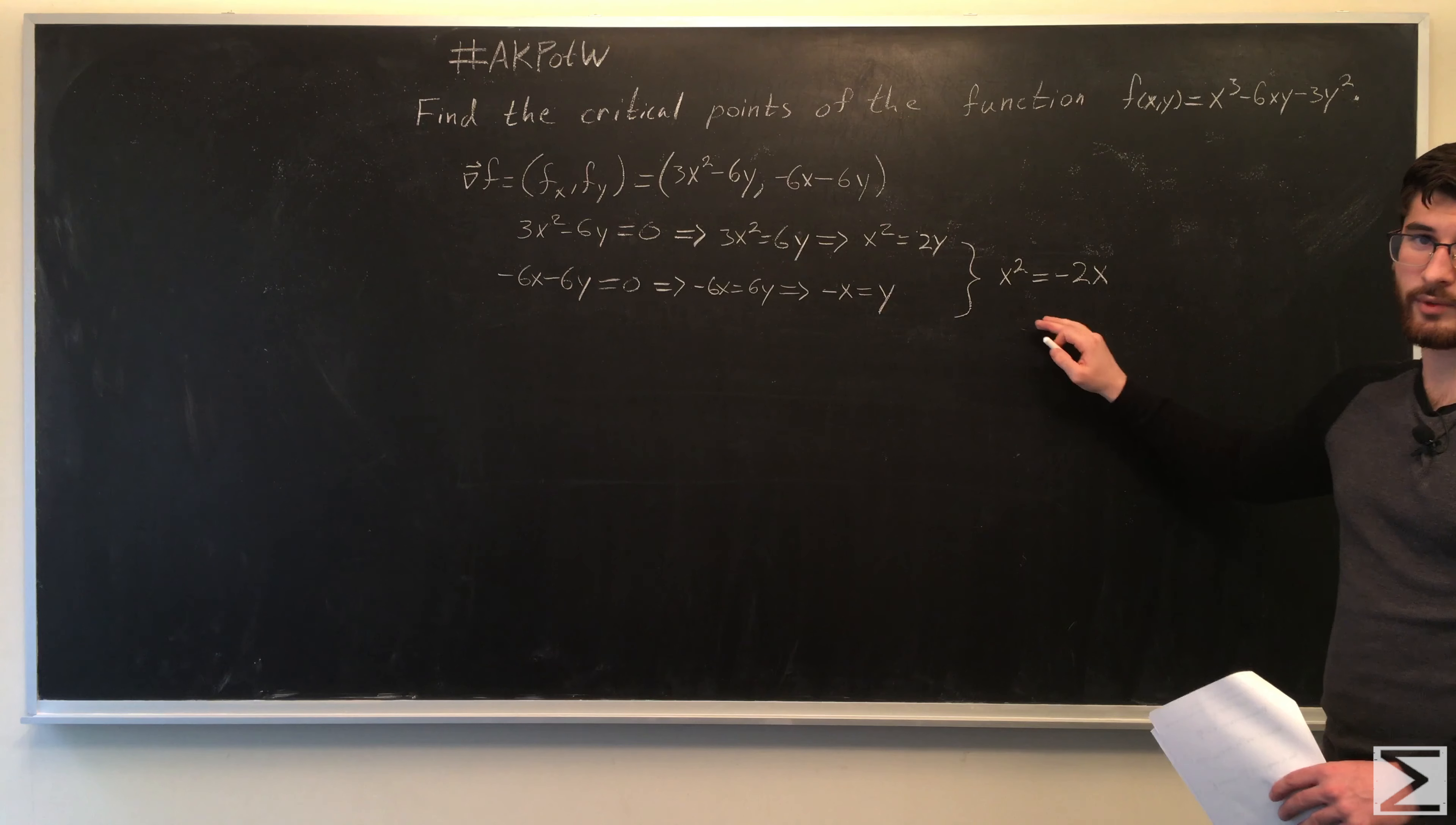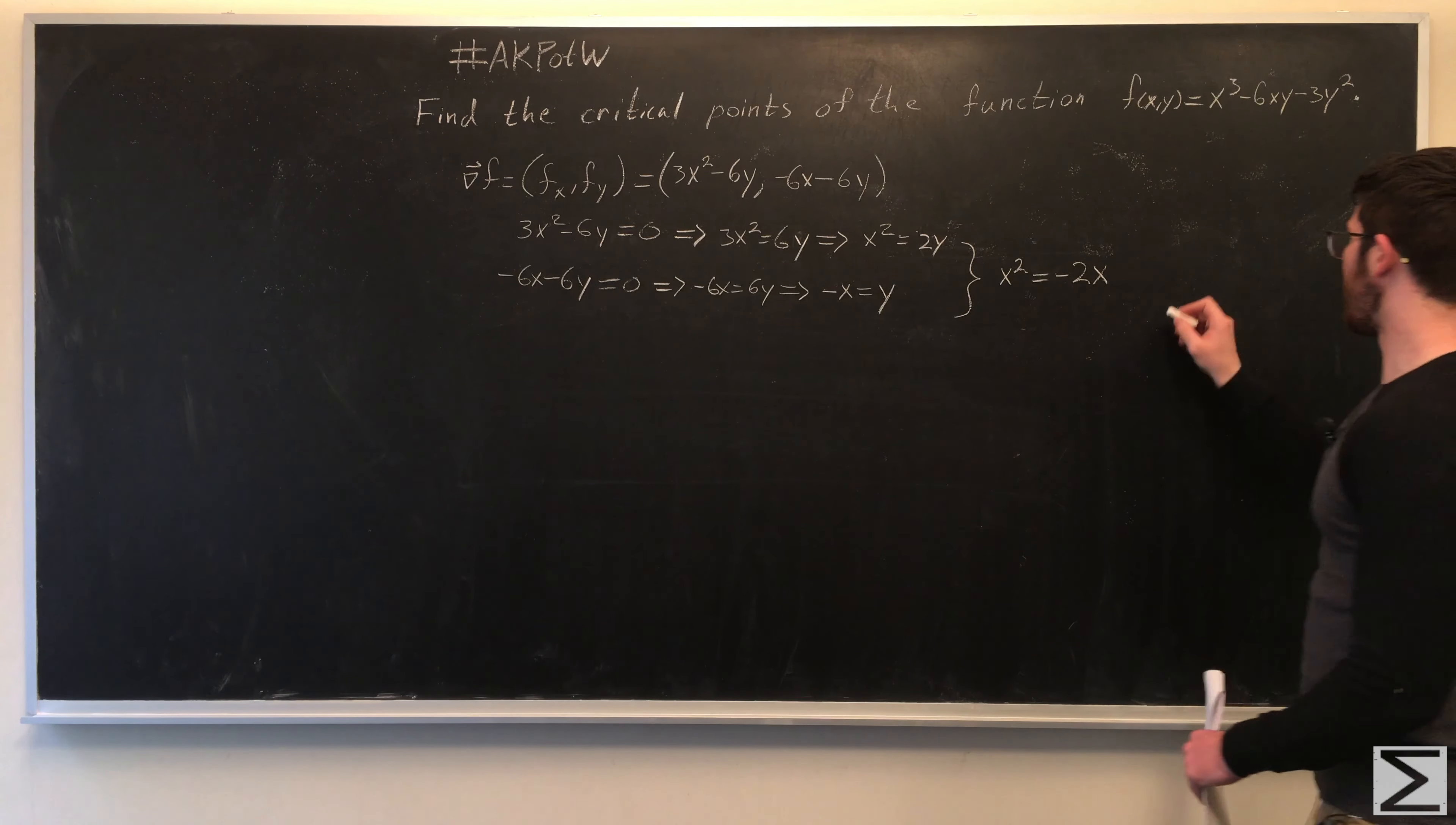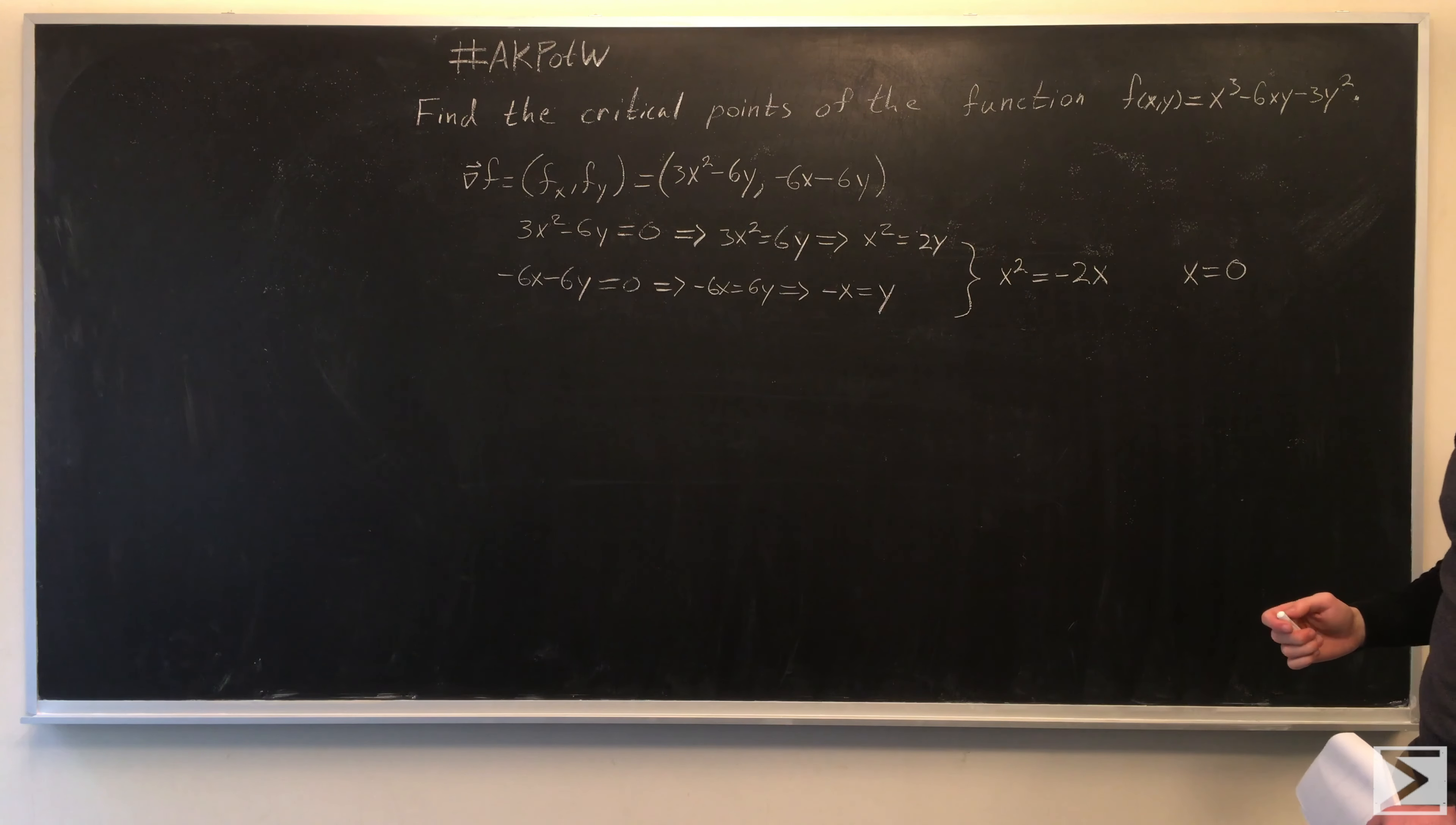When you look at this, the first critical point becomes obvious: when x = 0, it's true. It's also true when x = -2. -2 times -2 is 4, and -2 squared is 4.